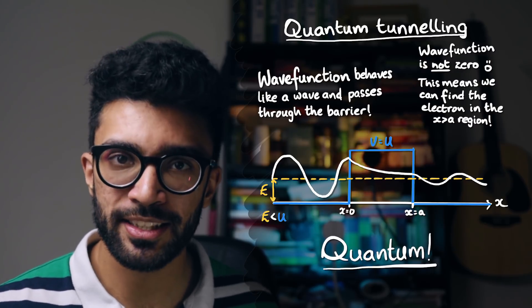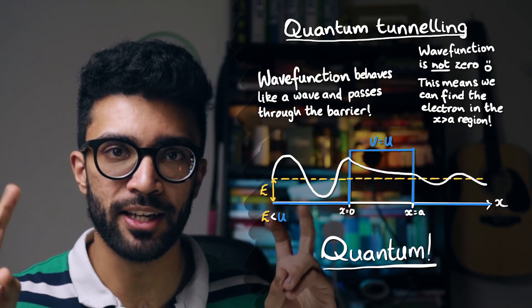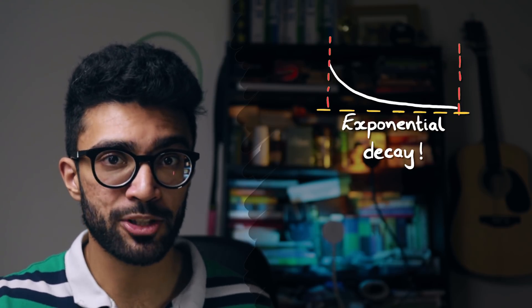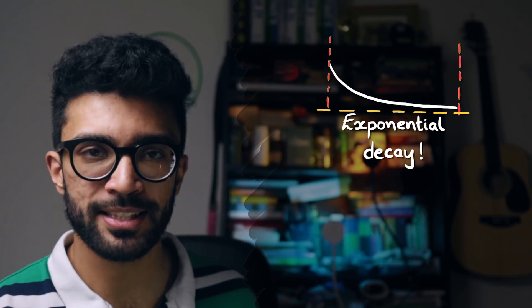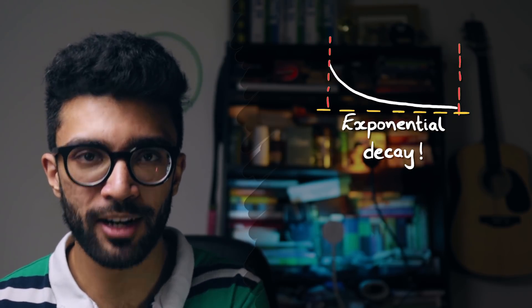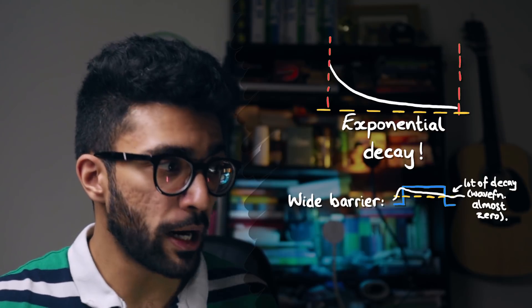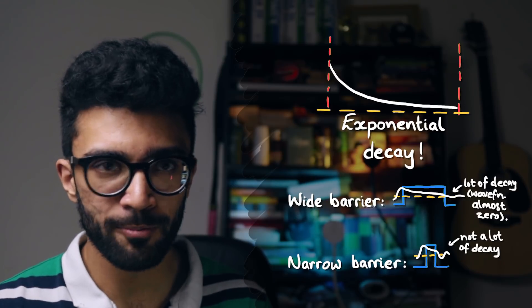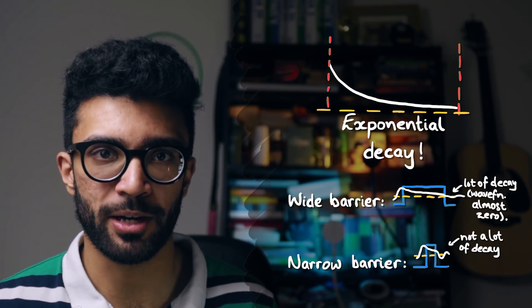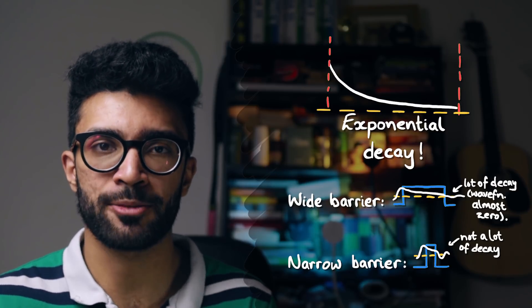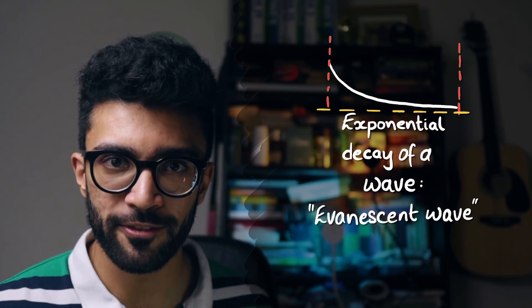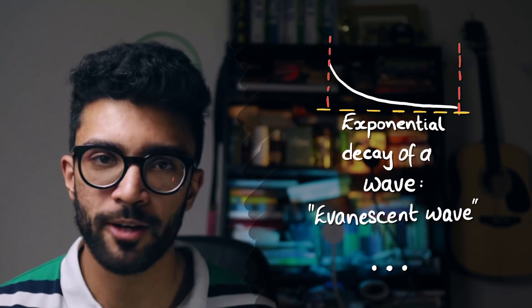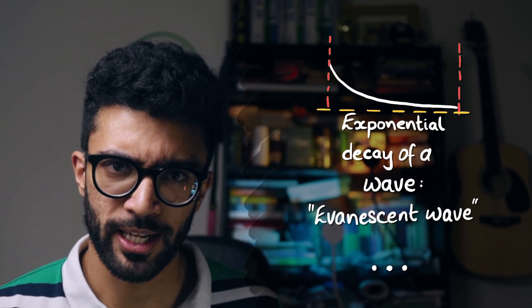The electron does have a chance of getting to the other side of the barrier, even though classically it didn't have enough energy. Specifically, within the potential barrier, our wave function looks like an exponential decay curve — and that's exactly what it is. The probability of us finding our electron as we move further and further to the right is decaying exponentially. This means that the wider the barrier, the less chance we have of finding our electron on the other side. But if we've got a really narrow barrier, then the electron has a decent chance of being found on the other side. When a wave decays exponentially, this is known as an evanescent wave — wake me up inside. Not that kind of Evanescence. I'm never going to sing on camera ever again, sorry about that.